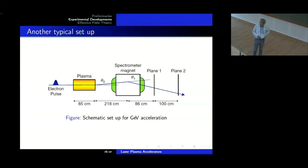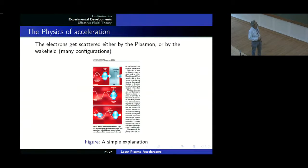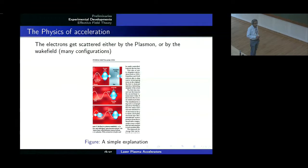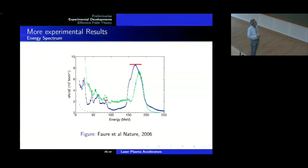This phenomenon must be a very rich laboratory to explore physics from all points of view. We should be teaching our students these things because these are the most exciting things. The conventional explanation is to say that the electrons get scattered either by a plasmon or by the wake field. But before we do that, I should show some experimental results.